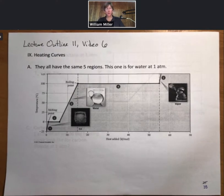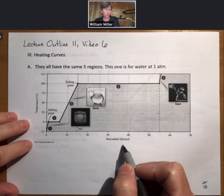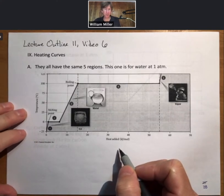This heating curve is for water at one atmosphere. The y-axis is going to be temperature. The x-axis is going to be heat added in kilojoules per mole.